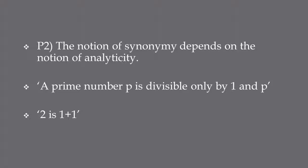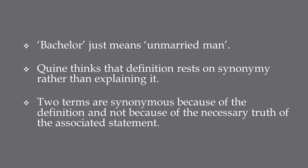To give an alternative example, suppose we define the number 2 as 1 plus 1. Then the statement '2 is 1 plus 1' is necessarily true. But this fact is not the reason why '2' is synonymous with '1 plus 1.' The reason is because that's how 2 is defined. In a similar way, 'bachelor' just means 'unmarried man,' just as the community of mathematicians defines a prime number as a number divisible only by 1 and itself. So a community of speakers defines 'bachelor' to be 'unmarried man.'